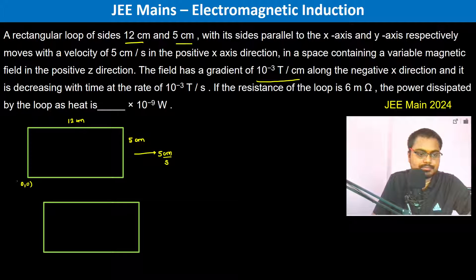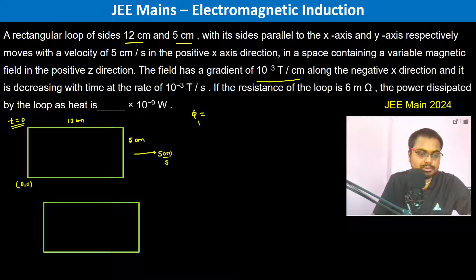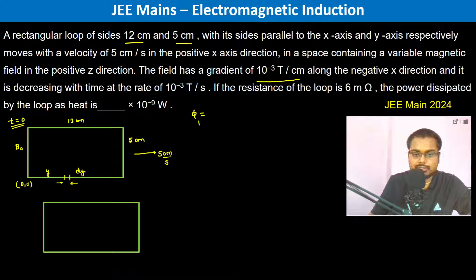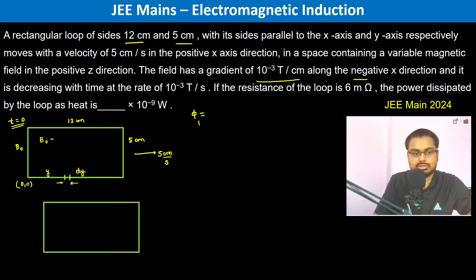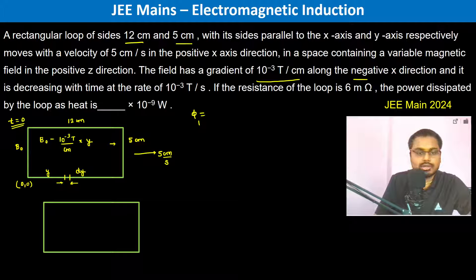Let this be the origin at t equals 0. What is going to be the flux here? In the first case, let's say the magnetic field is B naught. At a distance y, we take a dy strip. At y distance, the magnetic field is going to be B naught minus — because the gradient is along the negative x direction — so it's B naught minus 10 to the power minus 3 tesla per centimeter, into y.